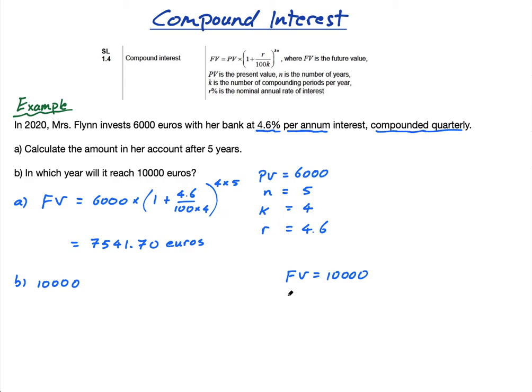The present value is still 6,000. The n, the number of years which we're trying to find, I don't know. K is still 4 and r is still 4.6. Now this is 6,000 times [1 plus (4.6 over 100 times 4)] all to the power of 4n, and I don't know what n is.